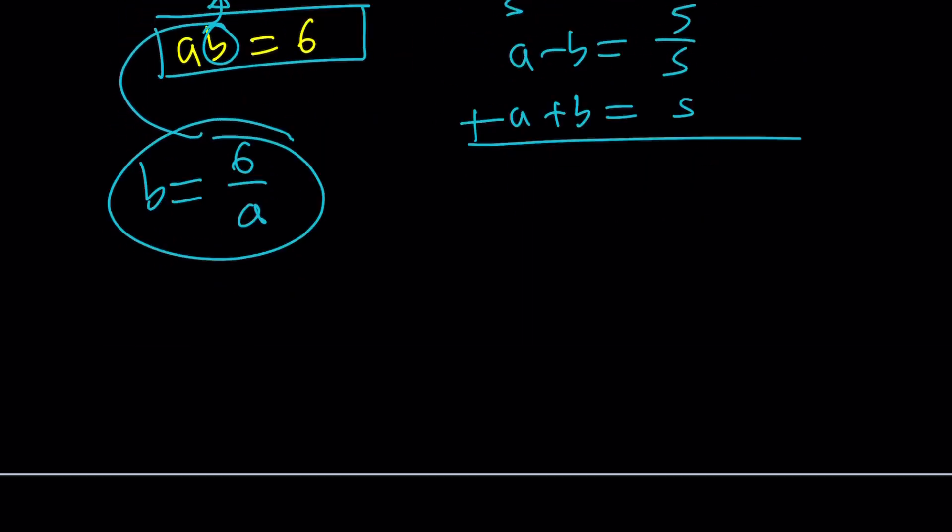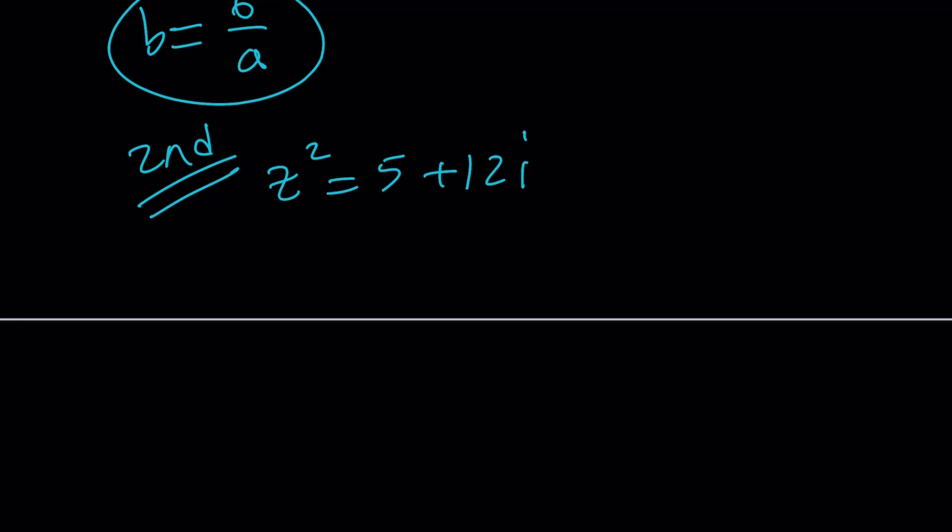Let's take a look at the second method. z squared equals 5 plus 12i. So I'm going to write this number in polar form. Think about how we can write a number in polar form. r times e to the power i theta, right? r is the modulus and theta is the angle. And we'll talk about how we find the angle. But let's go ahead and instead of using a theta, let's use a double angle because we're going to square root it.